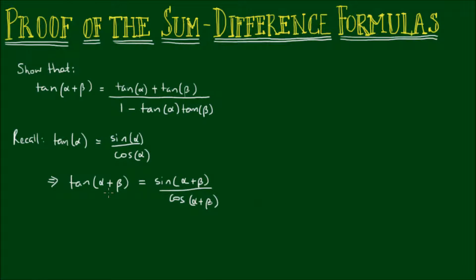So that should be pretty straightforward — we're just adding another angle into each of these terms. But we found in the last video that the sine of alpha plus beta is equal to the sine of alpha times cos of beta plus the sine of beta times cos of alpha.